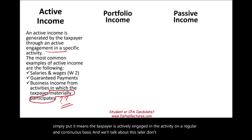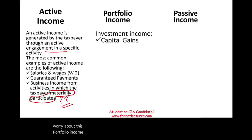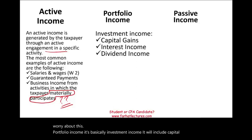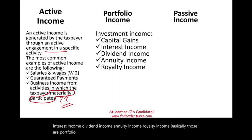Portfolio income is basically investment income. It includes capital gains, interest income, dividend income, annuity income, and royalty income — those are portfolio or investment income.